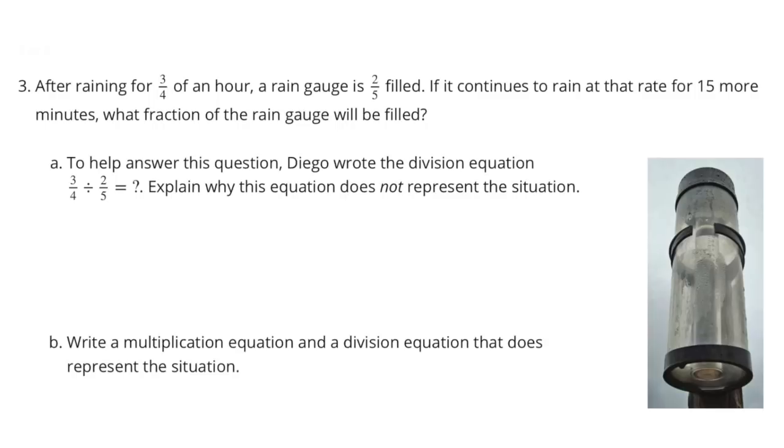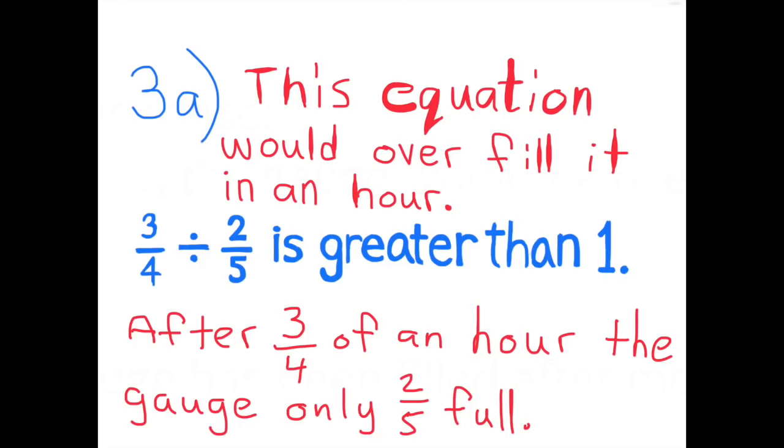Number 3. After raining for three-fourths of an hour, a rain gauge is two-fifths filled. If it continues to rain at that rate for 15 more minutes, what fraction of the rain gauge will be filled? A. To help answer this question, Diego wrote the division equation, three-fourths divided by two-fifths equals what number? Explain why this equation does not represent the situation. This equation would overfill it in an hour. Three-fourths divided by two-fifths is greater than one. After three-fourths of an hour, the gauge was only two-fifths full.